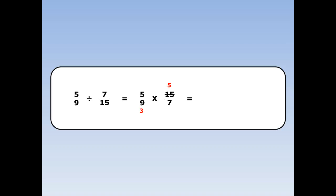Then continue as normal — top times top, bottom times bottom. 5 times 5 is 25, and 3 times 7 is 21. Now 25 over 21 is a top-heavy fraction, so we can turn it into a mixed number. 25 over 21 is the same as one whole and 4 twenty-firsts.